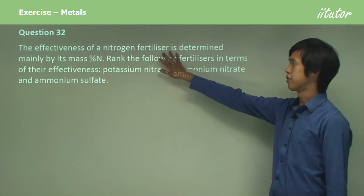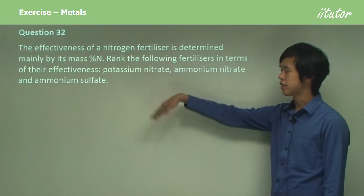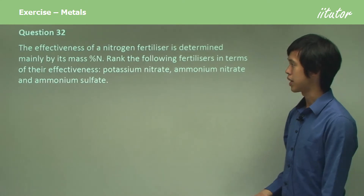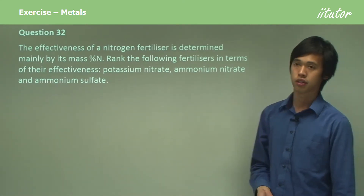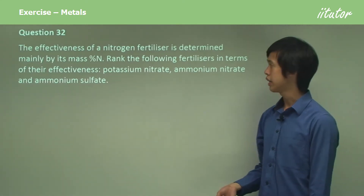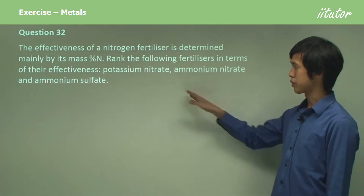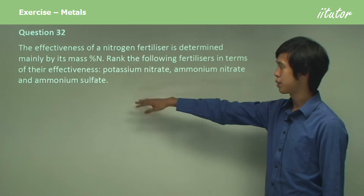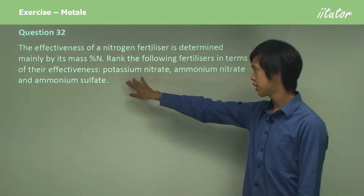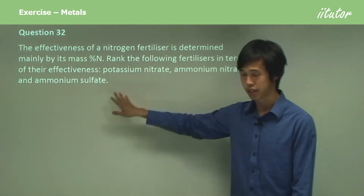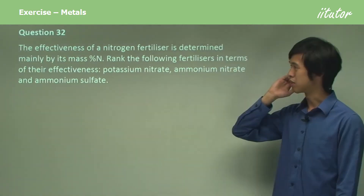The effectiveness of nitrogen fertilizer is determined mainly by its percentage mass of nitrogen. Rank the following fertilizers in terms of their effectiveness: potassium nitrate, ammonium nitrate, and ammonium sulfate.